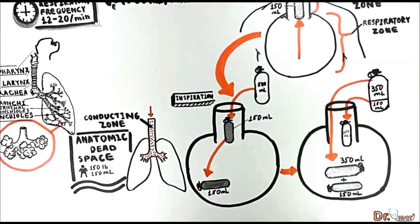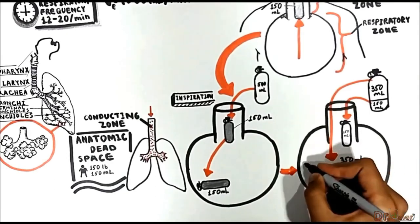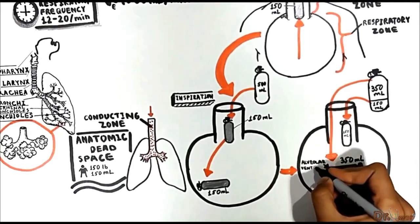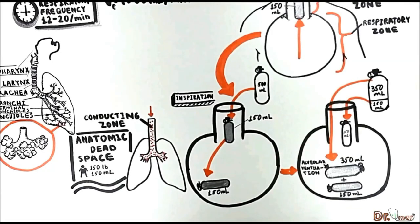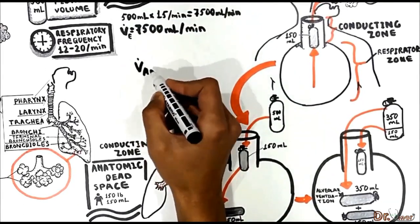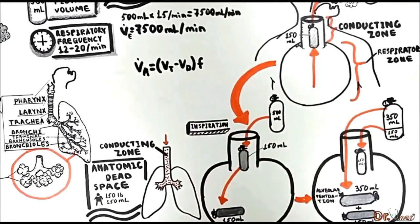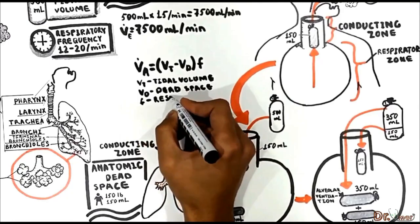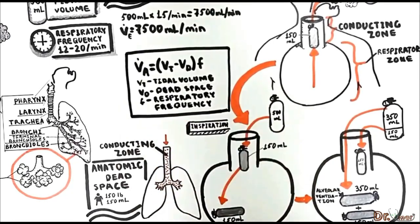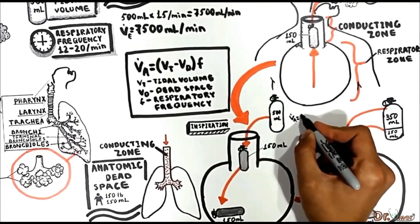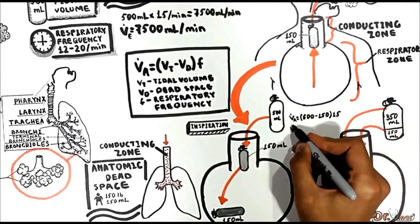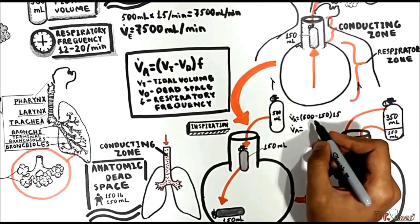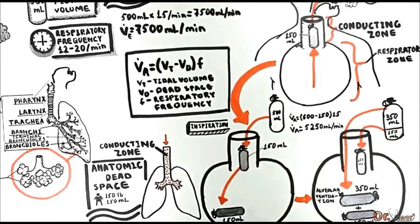Therefore, only 350 mils of fresh air that reached the alveoli is considered as alveolar ventilation. Alveolar ventilation represents the fresh room air delivered to the respiratory zone per breath. To determine alveolar ventilation we use the formula: VA equals (VT minus VD) times f, where VA is alveolar ventilation, VT is tidal volume, VD is dead space, and f is respiratory frequency. Putting in normal values: (500 mils minus 150 mils) times 15 equals 5250 mils per minute. The alveolar ventilation per inspiration is 350 mils.